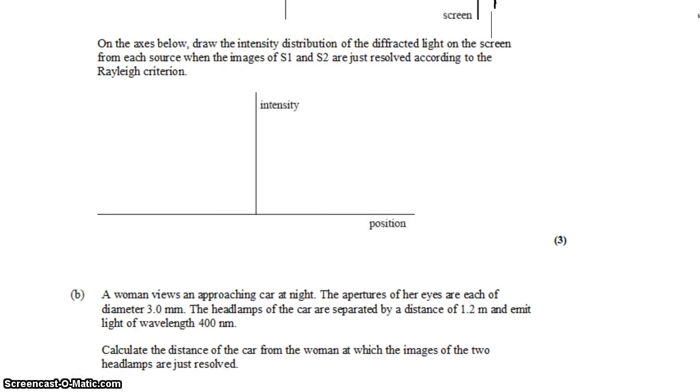On the axes below, draw the intensity distribution of the diffraction on the screen from each source when they are just resolved, which is part of the Rayleigh criteria. The Rayleigh criteria says that when two images are just resolved, when you can just barely tell that they are separate images, that occurs when their diffraction patterns overlap in such a way that the first maximum overlaps with the first minimum.